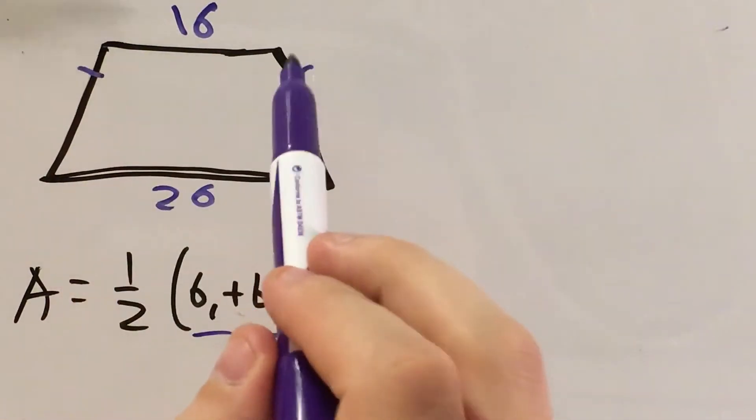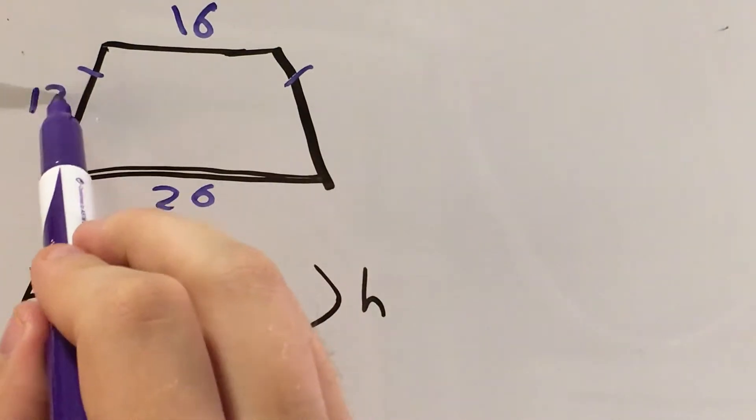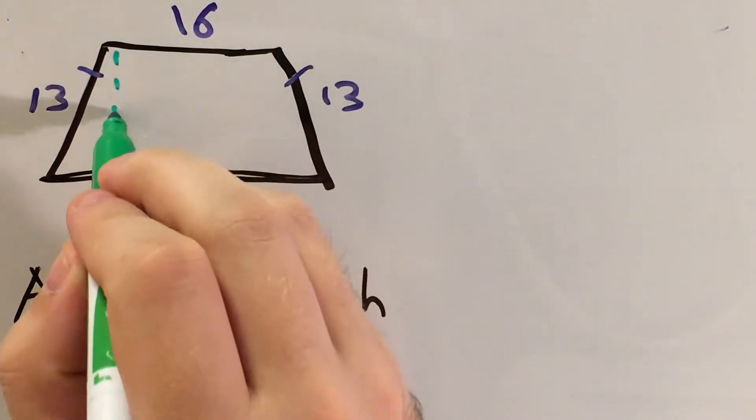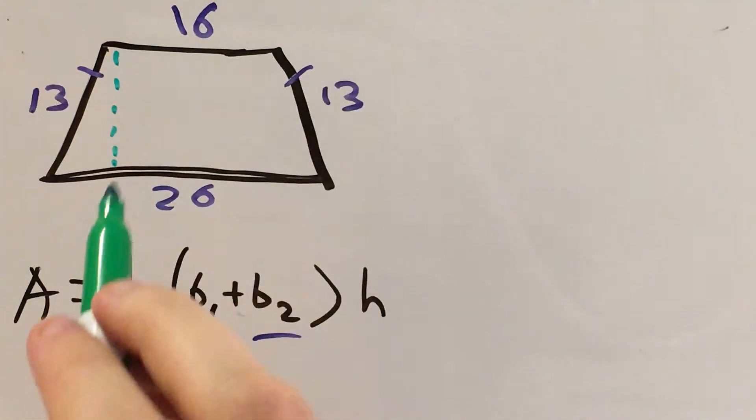We know it's an isosceles trapezoid, so these are congruent, and in fact it gives us a length of 13 for both of them. But it doesn't give us the height. It doesn't give us this measurement that runs perpendicular to both of our bases and describes the shortest distance between them. So we're going to have to figure that out ourselves.